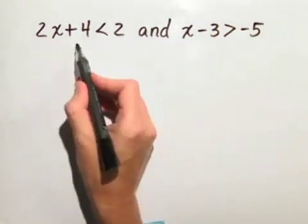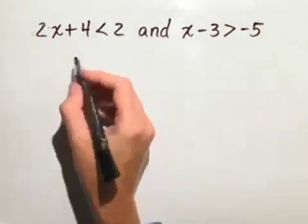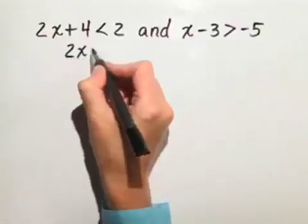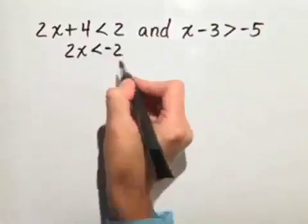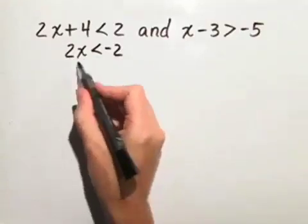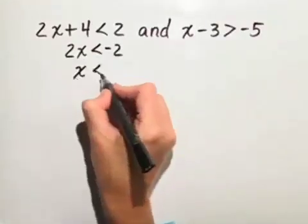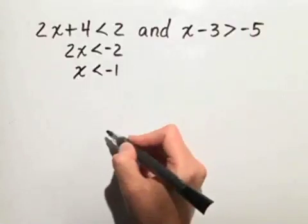Let's start off with our first inequality. We subtract 4 from both sides, and we have 2x is less than negative 2. When we divide both sides by 2, we have x is less than negative 1.